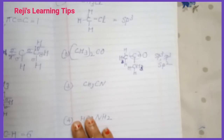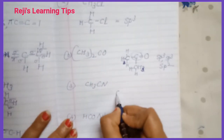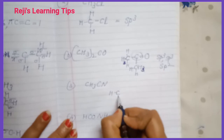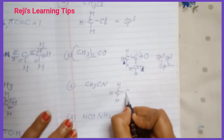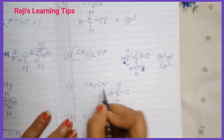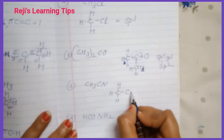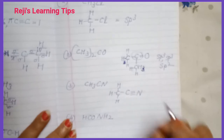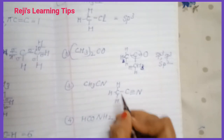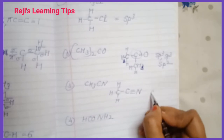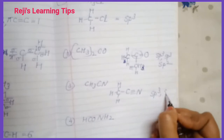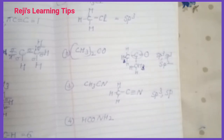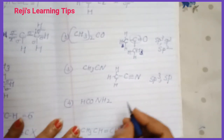Now looking at CH3–C≡C: the CH3 carbon has single bonds only — SP3. The carbon with the triple bond is SP hybridization.